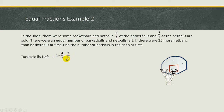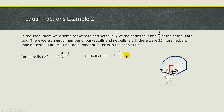Same thing for the netballs. You need to take 1 minus 3 quarters, you get 1 over 4. So this will represent 1 quarter of the netballs left.